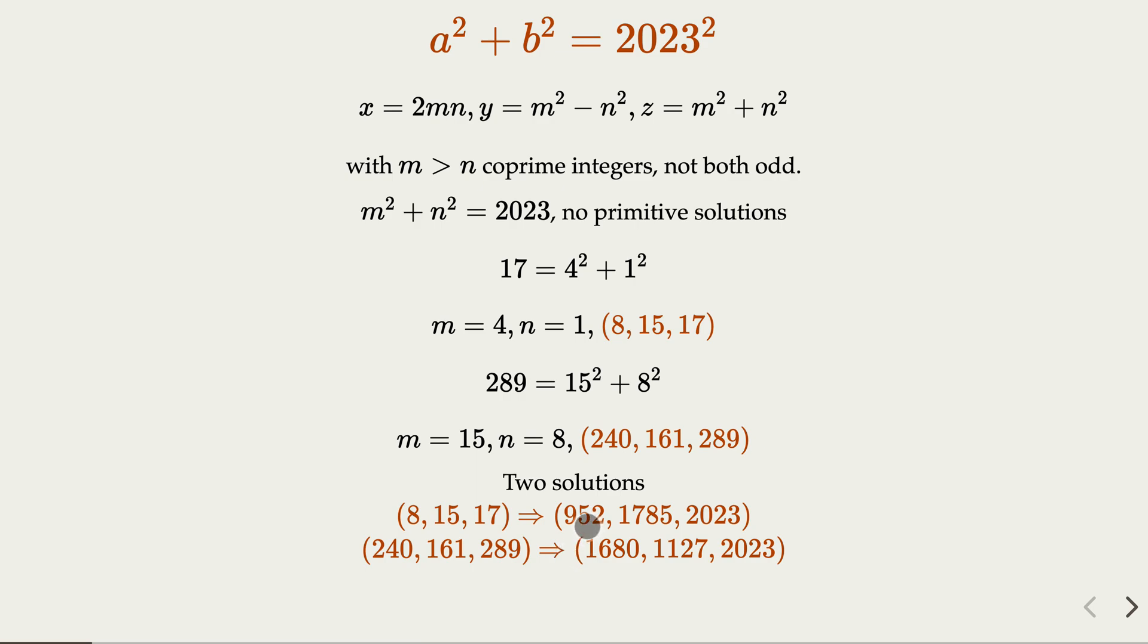Notice that as we said earlier, we don't consider if you swap 2952 and 1785, we don't consider it a new solution. We only count two solutions here. So that is the case where 2023 appears as c.